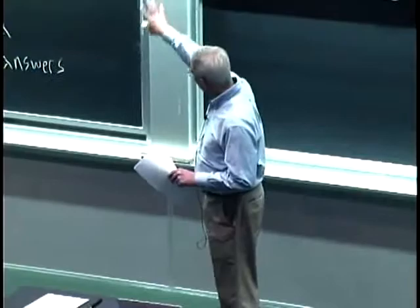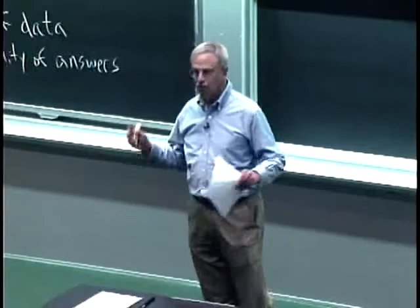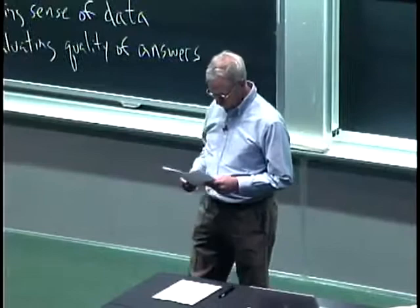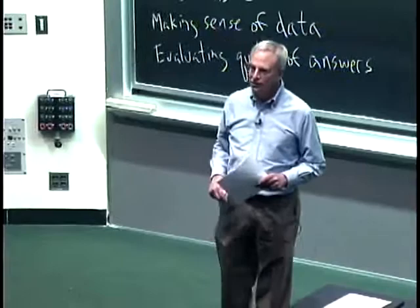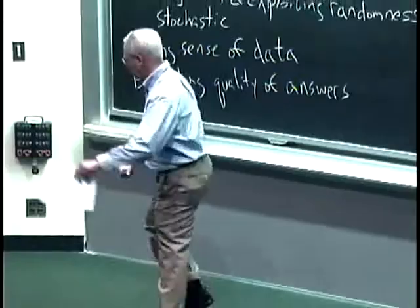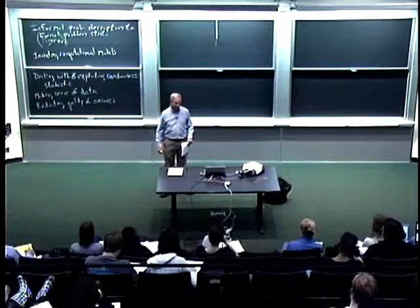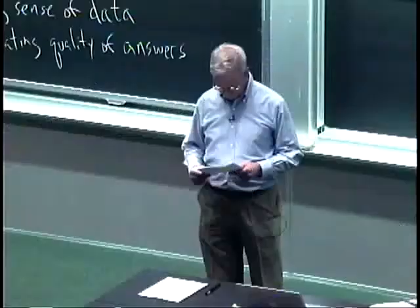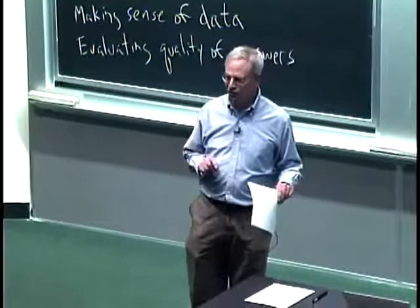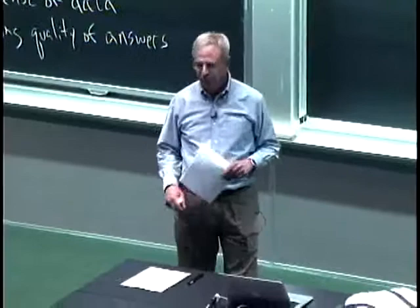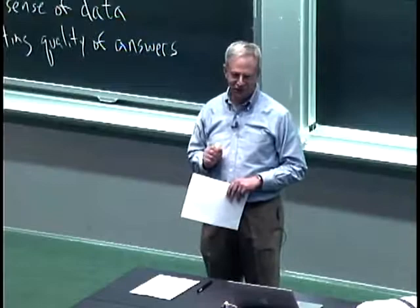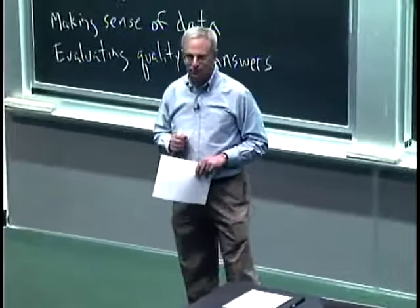So on to the first example. Consider the following situation: a seriously drunken university student is standing in the middle of a field. Every second he takes a step in some random direction. Now I'm going to ask you a question: if the student did this for 500 or 1,000 seconds, how far do you expect the student would be from where he started?